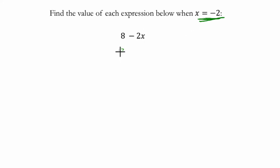So here it says 8 minus 2 times x. We know x is negative 2, so I'm going to show that as minus 2. Now here we are subtracting 2 times negative 2. So we're really subtracting, well, 2 times negative 2 is negative 4.